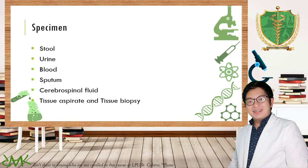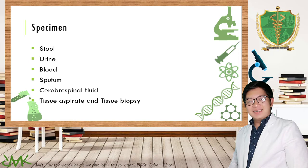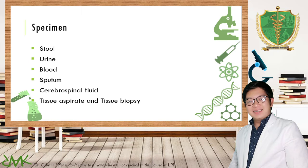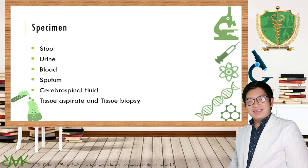Since parasites may also reside in other organs, different specimens are useful. For the urinary bladder and Trichomonas vaginalis, urine can be useful. Blood is used for parasites that invade RBCs — examples include Plasmodium, Babesia, Trypanosoma, and filarial worms. Sputum can demonstrate Paragonimus westermani, Echinococcus granulosus, Ascaris lumbricoides, hookworm, and Strongyloides, because Ascaris, Strongyloides, and hookworm are capable of heart-lung migration.